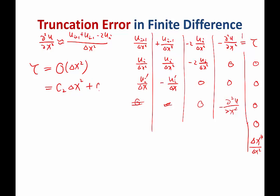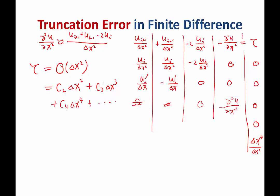This is equal to a constant, c2 times delta x squared, plus maybe another constant times delta x cubed, plus maybe another constant times delta x fourth, etc. But we don't really care that much about c3, c4, etc. Because when delta x is small enough, all of these high order terms is going to be negligible compared to the delta x squared term.